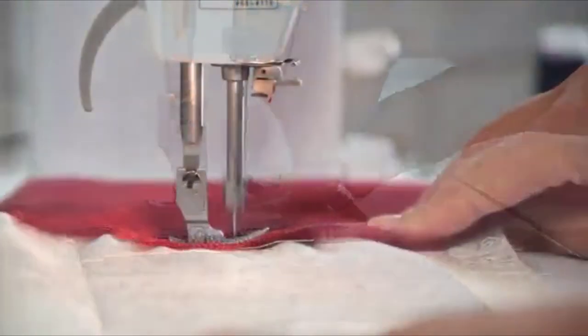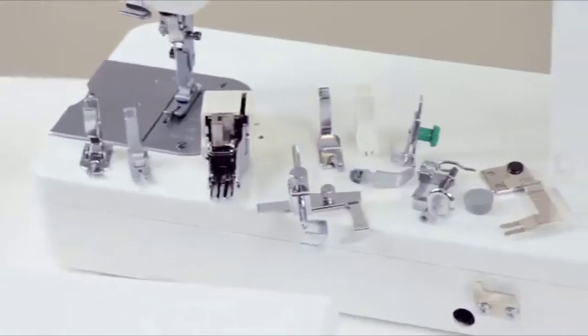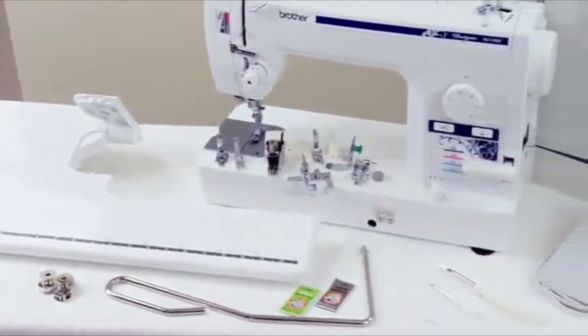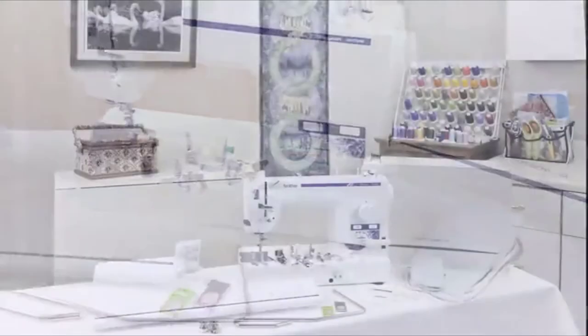The DZ1500F includes a fabric separator, extra-large extension table, six sewing feet, metal bobbins, knee lifter, needle set, foot controller, and a protective case.